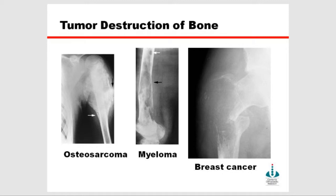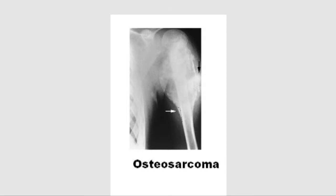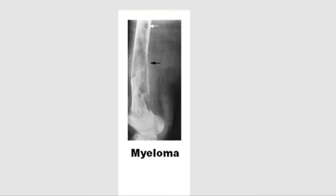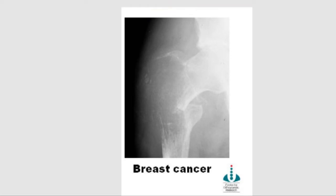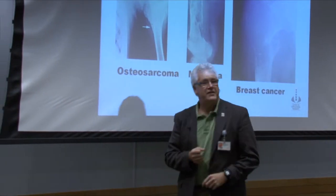When tumours progress to bone or arise in bone, they can cause a variety of different phenotypes or effects. The tumour on the very left is an osteosarcoma, a bone-forming tumour that occurs primarily in children — one of the few tumours that causes increases in bone. The tumour in the middle is multiple myeloma, which causes the bone to dissolve. On the right is a tumour from a patient with breast cancer that has metastasised to the bone, and there is a pathologic fracture, a consequence of weakening of the trabecular struts in that hip.